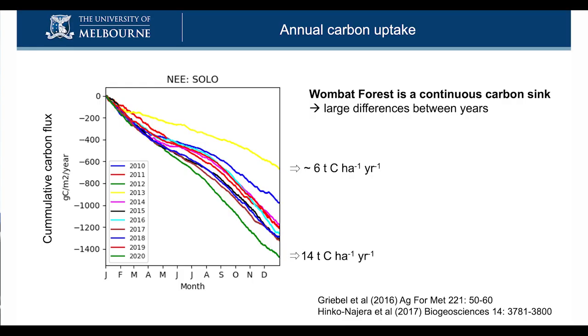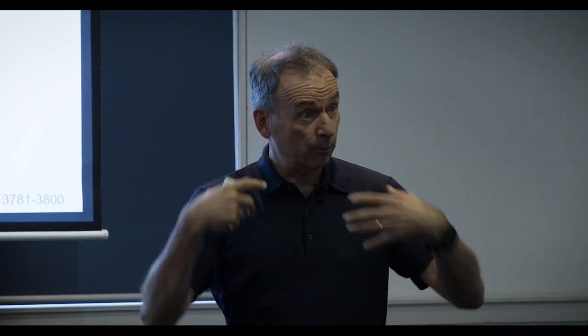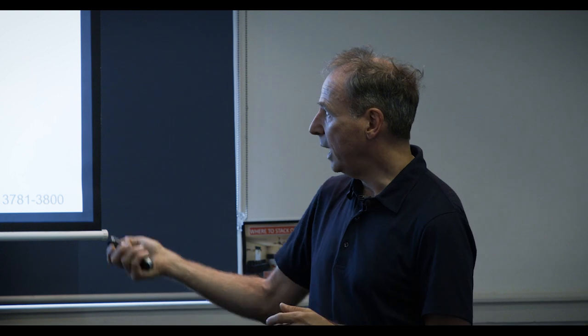Does it grow at the same rate all the time? No — there are quite substantial differences between years. This graph shows cumulative carbon uptake, starting at zero on January 1st and ending in December. On average, the lowest was about six tons per hectare in 2013, and the highest was in 2012 — so in two years apart we doubled the carbon input. 2012 reaped benefits from two very wet La Niña years; in 2013 we had heat waves at the wrong time causing leaf damage and less carbon uptake.